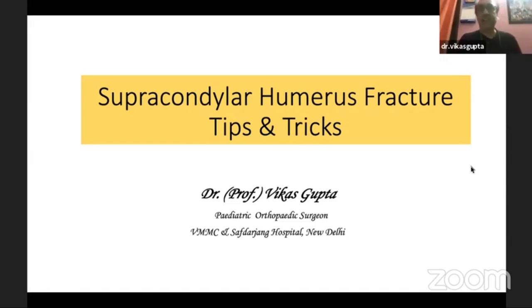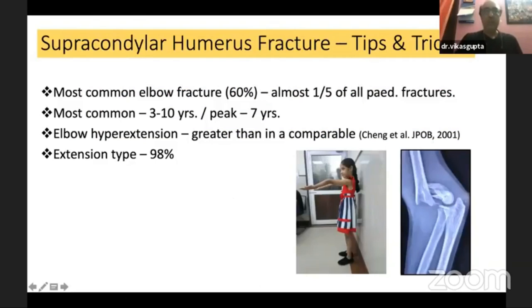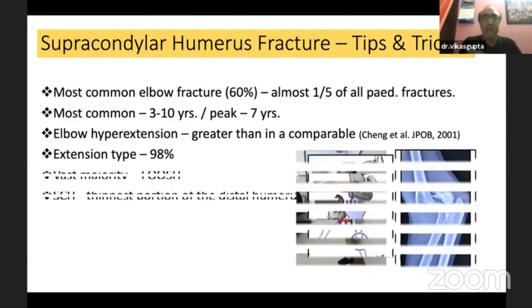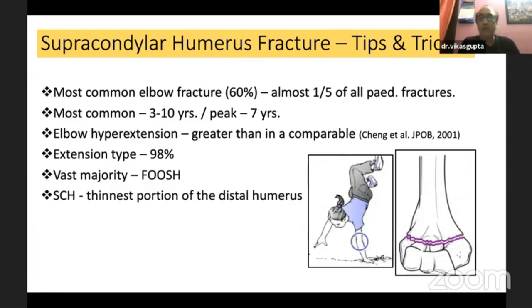I'll be sharing some tips and tricks about this common supracondylar humerus fracture which we are all dealing with. After my talk, those who are not doing it should be able to do it very well. It's the most common elbow fracture — about 60% of cases — and almost one-fifth of all pediatric fractures. It peaks around seven years of age because of remodeling. A study by Chang showed elbow hyperextension in these children. The vast majority are extension type, following fall from outstretched hand through the thinnest portion of the distal humerus.